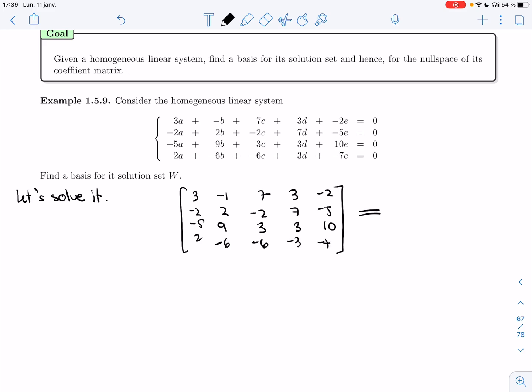So I'm going to reduce this. I did it ahead of time as usual. This is what I got. First row is 1, 0, 3, 0, 1. Second is 0, 1, 2, 0, 2. And then 0, 0, 0, 1, minus 1. 0, 0, 0, 0, 0, 0.